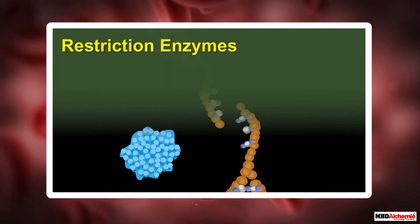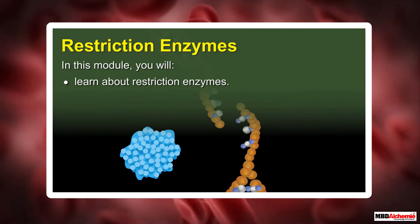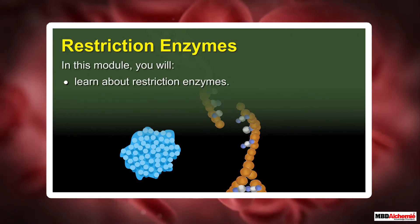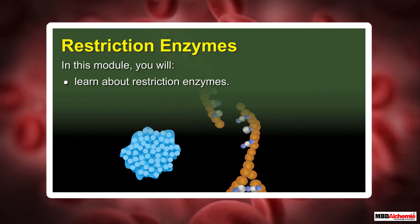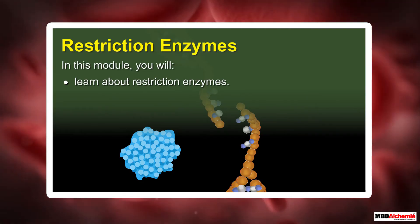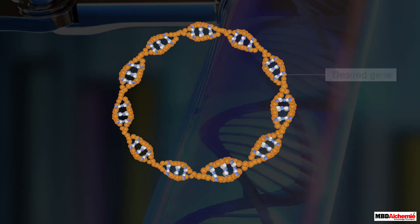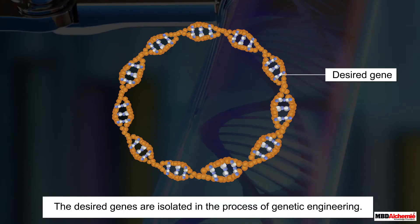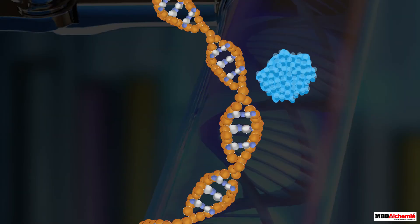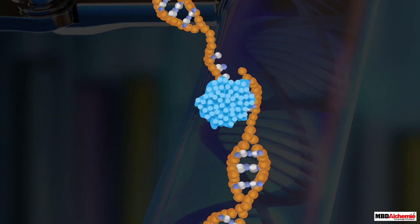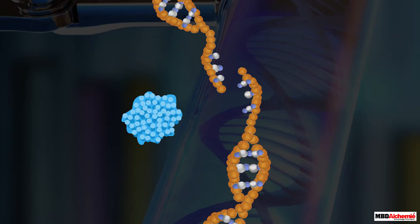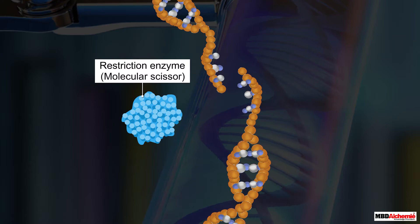Restriction Enzymes. In this module, you will learn about Restriction Enzymes. You have already learnt that desired genes are isolated in the process of genetic engineering. For this purpose, it is important to cut DNA at specific locations. This is done by using Restriction Enzymes, also known as molecular scissors. Let us find out more about these enzymes.